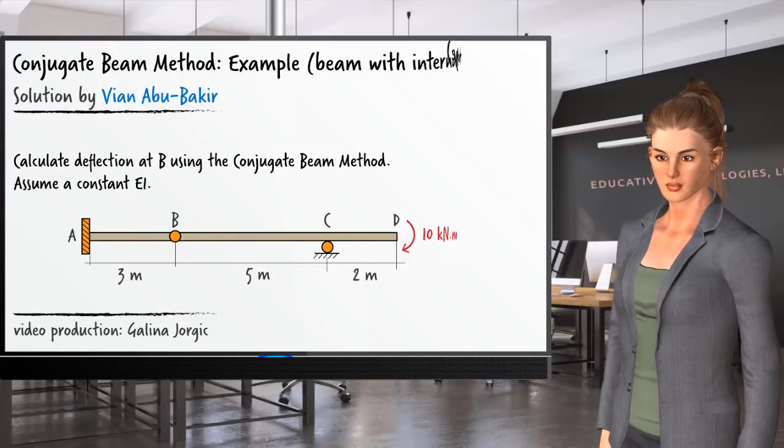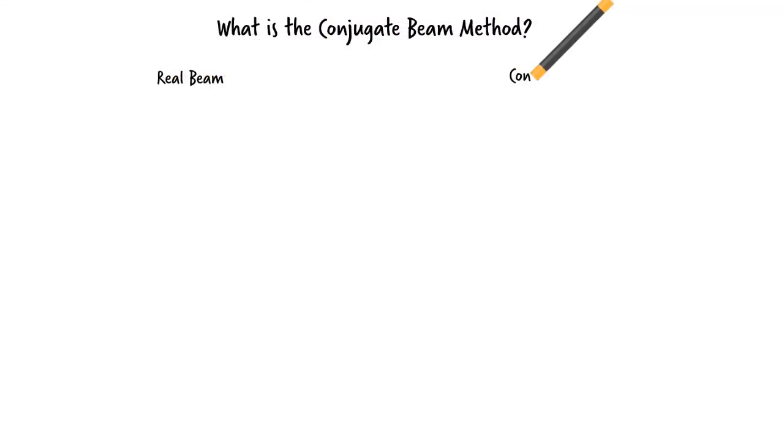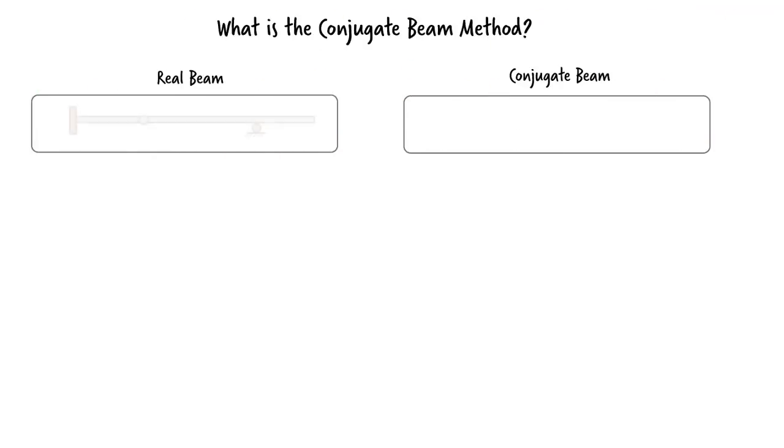First, let's do a cursory review of this method. The basic idea is to convert the real beam to an equivalent conjugate beam by changing the beam segment's boundary conditions.